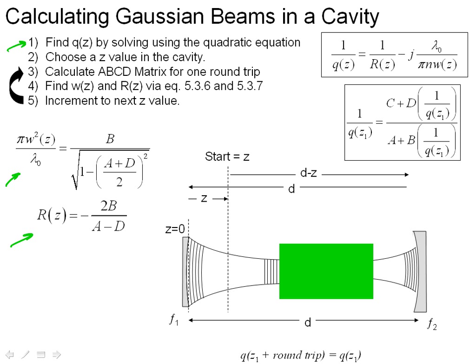And then we need to start the calculations. The second step is you choose a Z value in the cavity, and just for random choice, we'll start right here. And then we have to calculate the ABCD matrix for this.